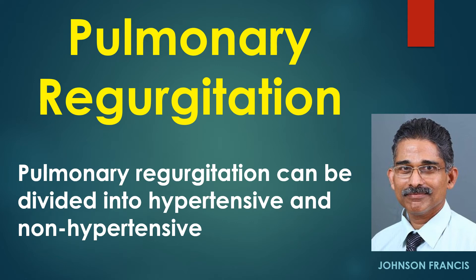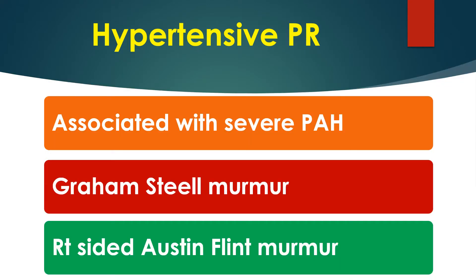Pulmonary hypertension can be divided into hypertensive and non-hypertensive. The former is associated with pulmonary arterial hypertension while the latter is not. Hypertensive PR is associated with severe pulmonary hypertension. It produces a blowing decrescendo early diastolic murmur with the eponym Graham Steele murmur.